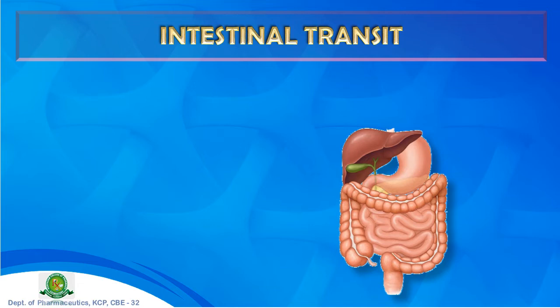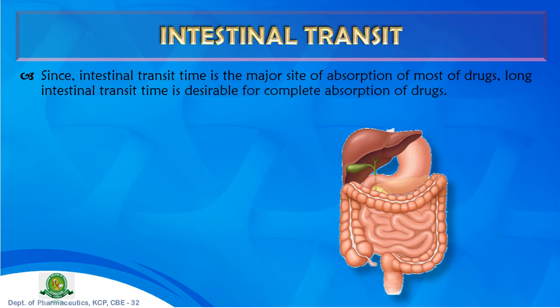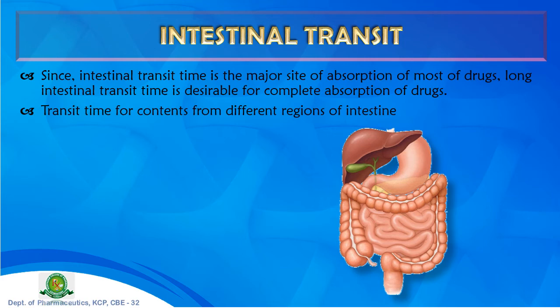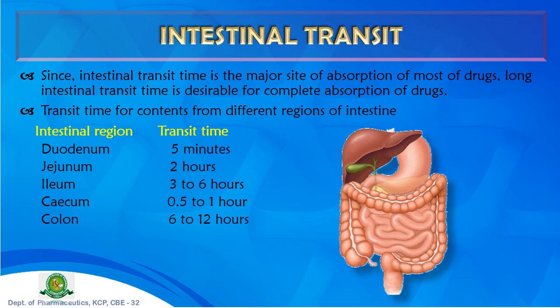The next factor is intestinal transit. The small intestine is the major site for absorption of most drugs, and a sufficient intestinal transit time is required for complete drug absorption. Transit time varies by intestinal region: duodenum ~5 minutes, jejunum ~2 hours, ileum ~3–6 hours, cecum ~0.5–2 hours, and colon ~6–12 hours.